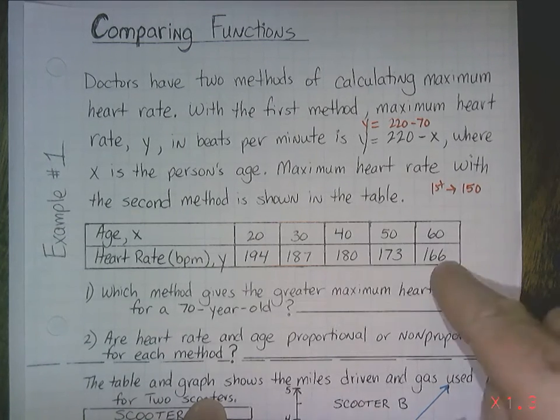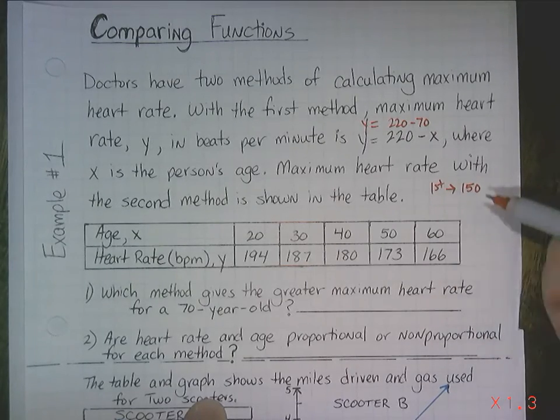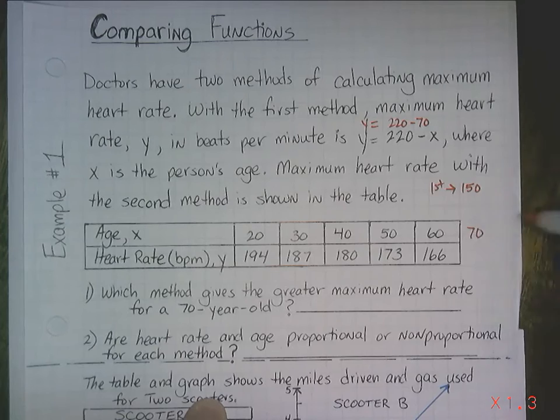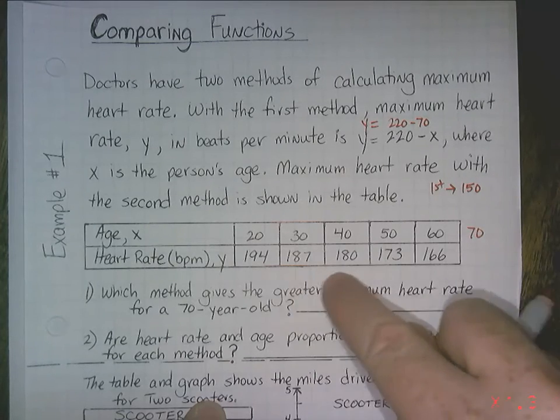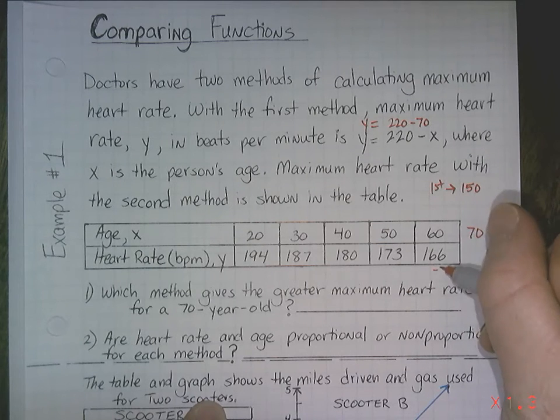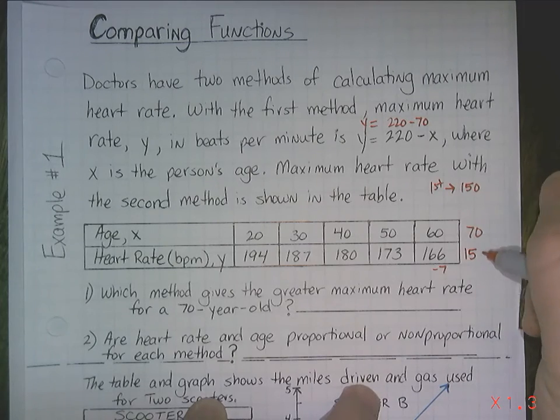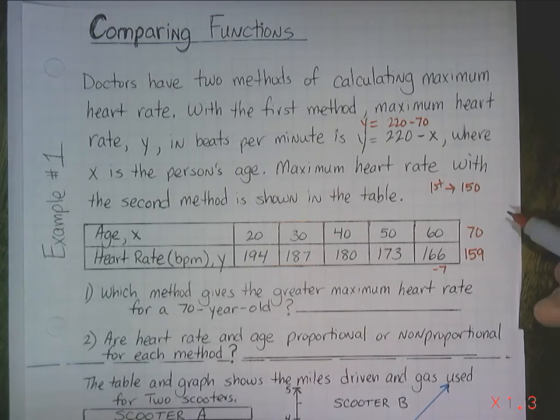The second method is using this chart, or this table, I should say. It doesn't go up to 70, but you can make it. If this increases by 10 each time on the age, and this decreases by 7 each time, well, I'm going to subtract 7 from here, and I should get 159. So that's the second method.